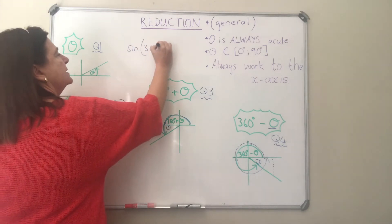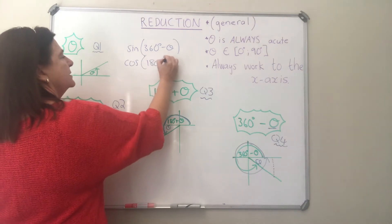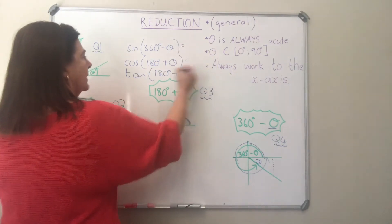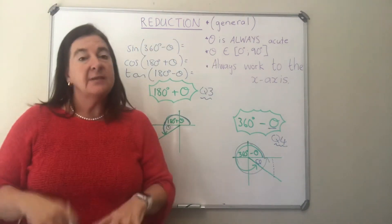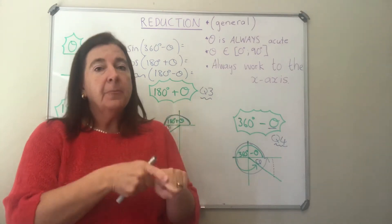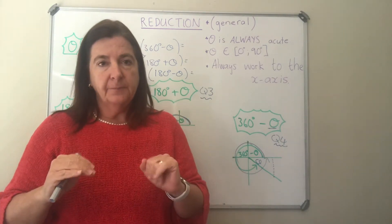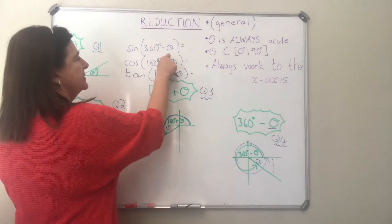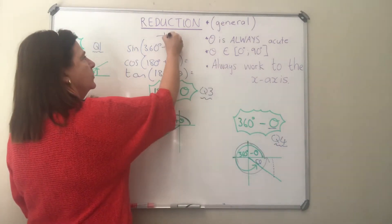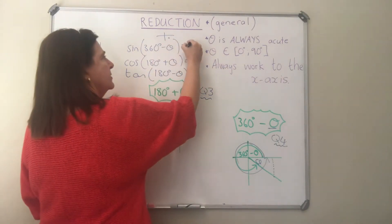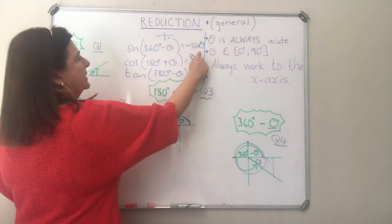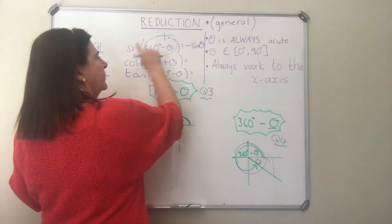Let's look at: sine of 360 minus theta, cos of 180 degrees plus theta, and tan of 180 degrees minus theta. Each of these angles on the left are bigger than 90 degrees — not acute — and we want to reduce them. The two questions: firstly, what quadrant is this angle in, and secondly, is it positive or negative? For sine of 360 minus theta: 360 minus theta is always in the fourth quadrant, and sine is negative there, so this reduces to negative sine theta.